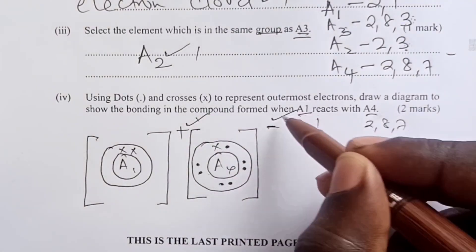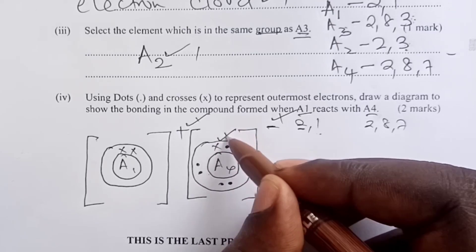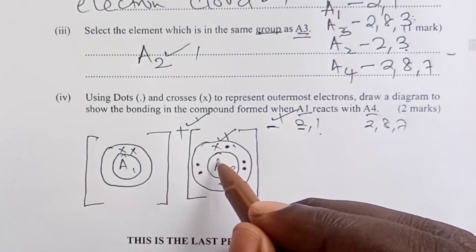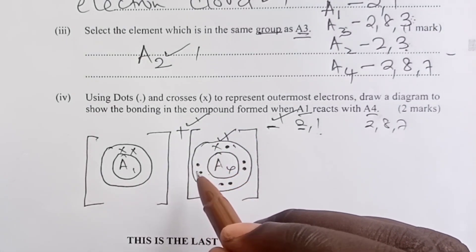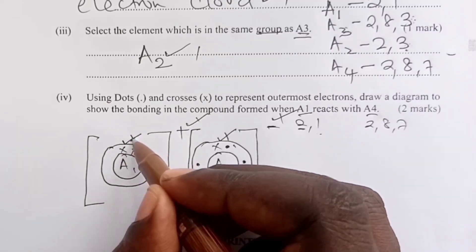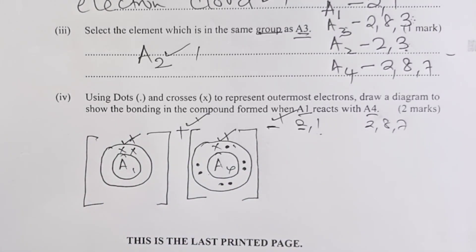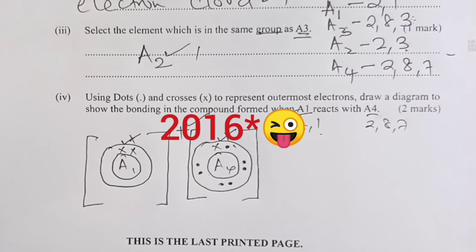So two marks, half for the ions, half for the accepted electron, and half for the two electrons that remain on A1. Thanks for watching. That was all as tested in the year 2017 for the periodic table, but it also included some questions on thermal decomposition of nitrates.